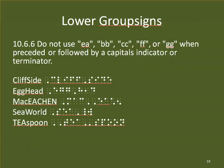However, do not use EA, BB, CC, FF, or GG when preceded or followed by a capitals indicator or terminator, since those are not letters. So if 'cliffside' has 'side' capitalized, we cannot use FF. Egghead — if H in 'head' is capitalized, we can't use GG. Mac Eakin — capital indicators mean we cannot use EA. SeaWorld has a capital indicator, so no EA. And teaspoon — that's a capitals terminator indicator, not a letter, so we can't use the EA contraction there.